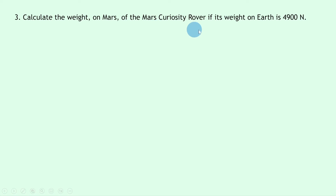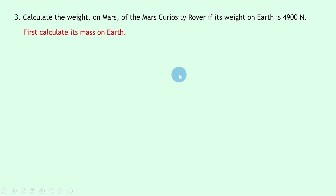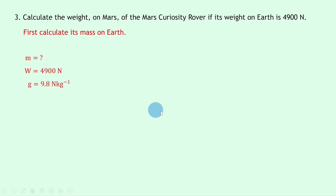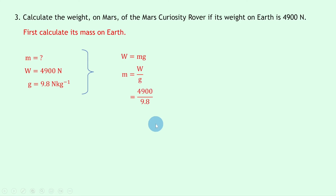Question three asks us to calculate the weight on Mars of the Mars Curiosity Rover, given its weight on earth is 4900 newtons. First we calculate its mass on earth. Writing down what we know: we're trying to find m, the weight W is 4900 newtons, and g on earth is 9.8 newtons per kilogram. Writing down W = mg and rearranging gives m = W/g. Substituting in: 4900 divided by 9.8 gives an answer of 500 kilograms.